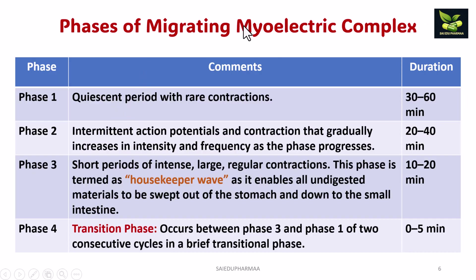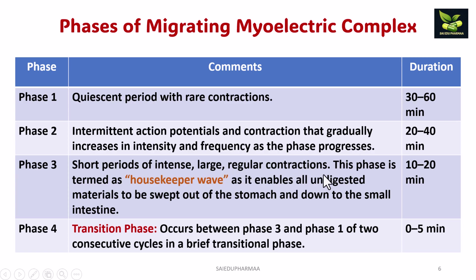These are the important phases of the Migrating Myoelectric Complex. Though four phases are listed, there are basically three main phases. Phase 1 is the quiescent period with rare contractions, lasting 30 to 60 minutes. Phase 2 consists of intermittent action potentials and contractions that gradually increase in intensity and frequency, lasting 20 to 40 minutes. Phase 3 consists of short periods of intense, large, regular contractions, termed the 'housekeeper wave' because it sweeps all undigested materials out of the stomach and into the small intestine, lasting 10 to 20 minutes.